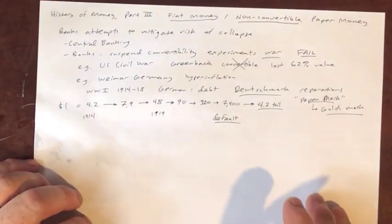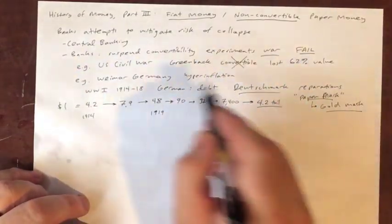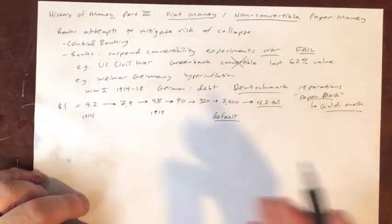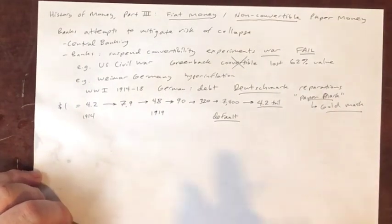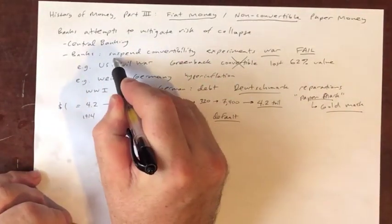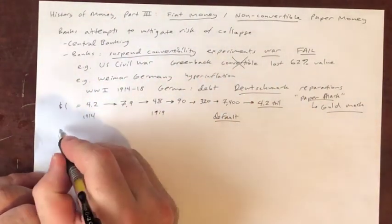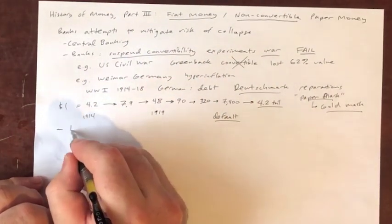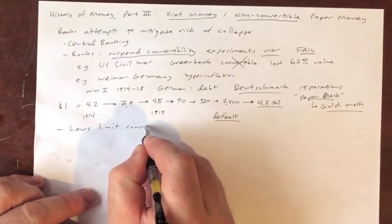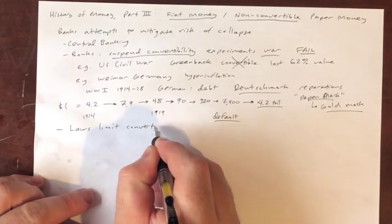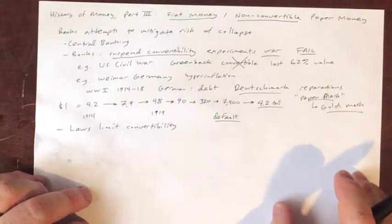So suspending convertibility — the point is, this is not a good idea; it ends in failure. In addition to these emergency suspensions, banks also look for laws that limit convertibility even under good times.